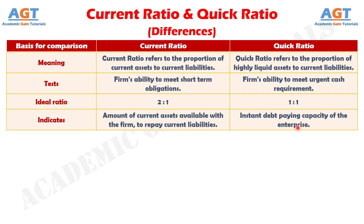Liquidity ratios are used all around the world to check the financial soundness, profitability, and operating efficiency of the entity. The basic difference between the two liquidity ratios is that the quick ratio gives you a better picture of how well a firm repays its short-term dues in time, without using the revenue from the sale of inventory.